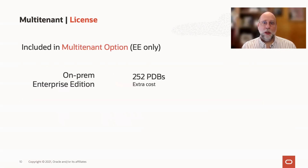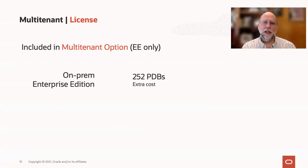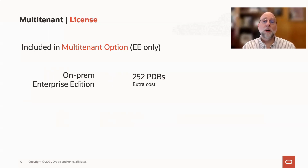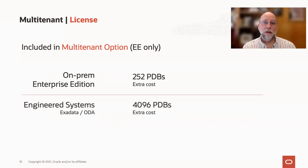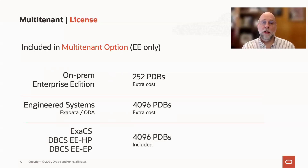In the multi-tenant option, if you're going to pay for that extra option and do really large-scale consolidation, there are some distinctions. If you're on-premises with Enterprise Edition on non-engineered systems, you can have up to 252 pluggable databases in a container with the multi-tenant option, which is an extra cost option on Oracle Database. If you're on Exadata or ODA — Oracle Database Appliance — you can push that even further, all the way up to 4,096 pluggable databases in a container. The same is true in many cloud offerings: Exadata Cloud Service and the high, enterprise edition, or extreme performance edition in the cloud.